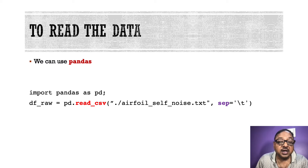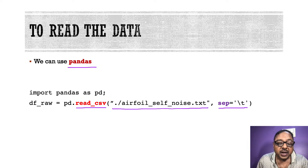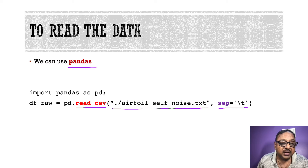I will show you the commands and the libraries, and then we will go to Jupyter notebook and see them in action. Before we can start creating our model, we require to read the data. For reading the data, we require the library pandas. In pandas, there is a function called read_csv. Our data happens to be in a text file, so we give the file name. This file has a tab separator, so we specify separator equal to tab. We name the data frame as df_raw.